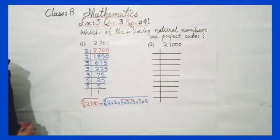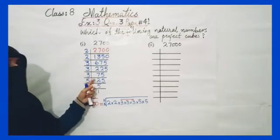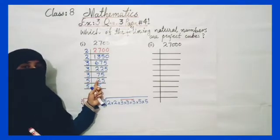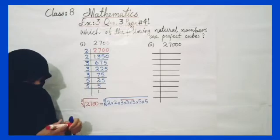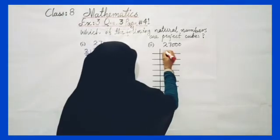Since not all prime factors form complete groups of three, 2,700 is not a perfect cube.